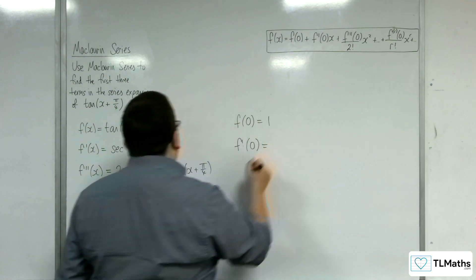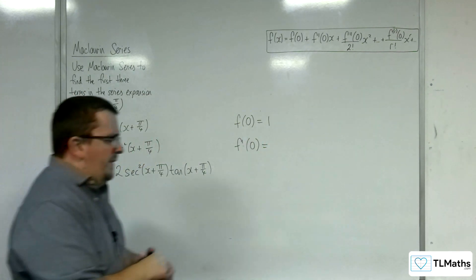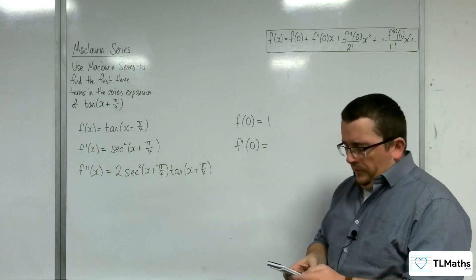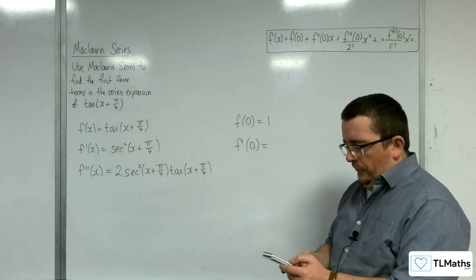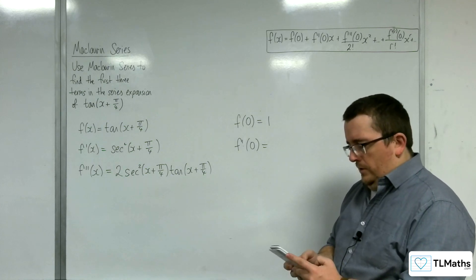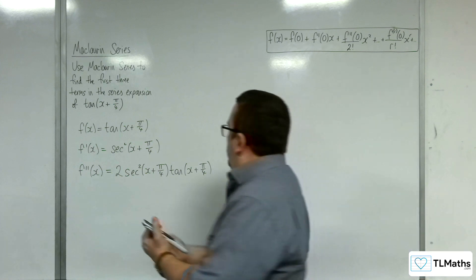First derivative, getting ahead of myself. So then I've got sec squared of pi over 4, so that would be 1 over cosine of pi over 4 squared. So that would be 2.